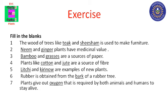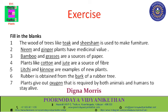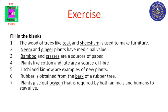Fourth, plants like cotton and jute are a source of fiber. Fifth, lychee and keno are examples of new plants. Sixth, rubber is obtained from the bark of a rubber tree. Seventh, plants give out oxygen, which is required by both animals and humans to stay alive. Write these in your textbook.